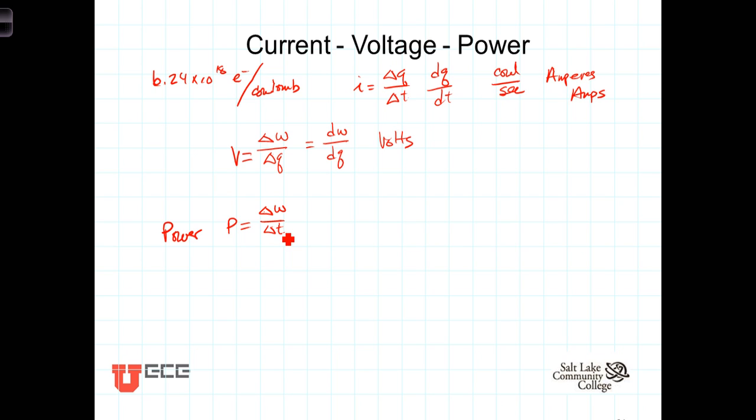In an electrical system, we can calculate the change in energy per change in time as equal to the change in charge per change in time, times the change in energy per change in charge. The charges cancel, and we're left with power being the change in energy per change in time.